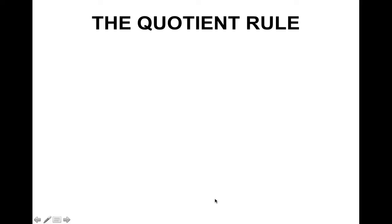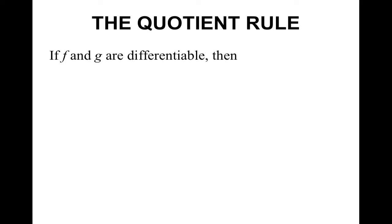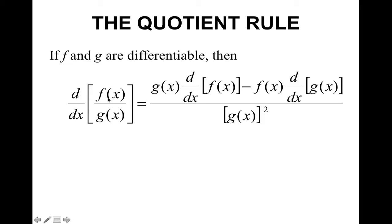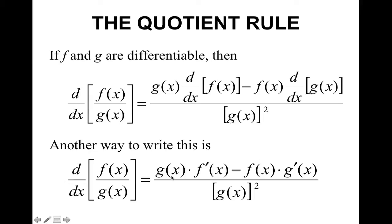The quotient rule applies when you have two differentiable functions f and g. When you have a function divided by another function, you take the derivative of f — the top — times g — the bottom — minus the top, f, times the derivative of g — the bottom — all over g squared, the bottom squared. You can also write this with tick marks: f prime times g minus f times g prime, all over g squared.